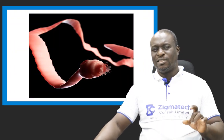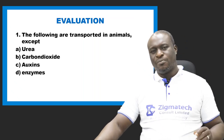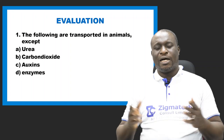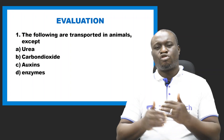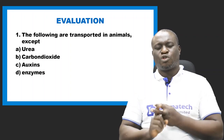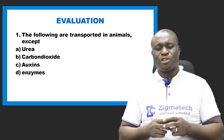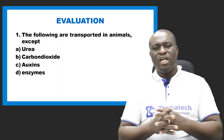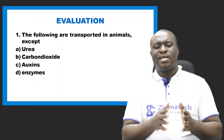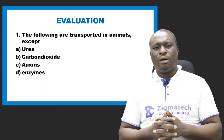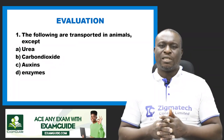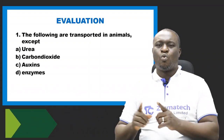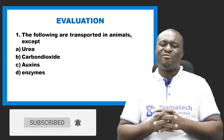This brings us to the end of Transport System 1. In this class, we have talked about the definition of transport system, processes involved during transportation — diffusion and osmosis — the need for a transport system, materials being transported both in plants and in animals, the medium or media of transportation in living organisms, and the mechanism of transportation as seen in some organisms, including a unicellular organism and one multicellular organism. Now let's take a look at some evaluation questions.